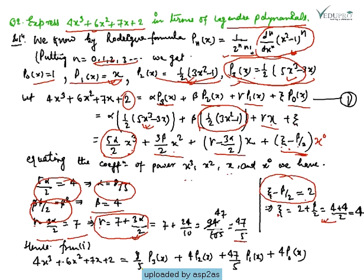Putting all values α=8/5, β=4, γ=47/5, ζ=4 into the equation, we have 4x³ + 6x² + 7x + 2 = (8/5)·P_3(x) + 4·P_2(x) + (47/5)·P_1(x) + 4·P_0(x).